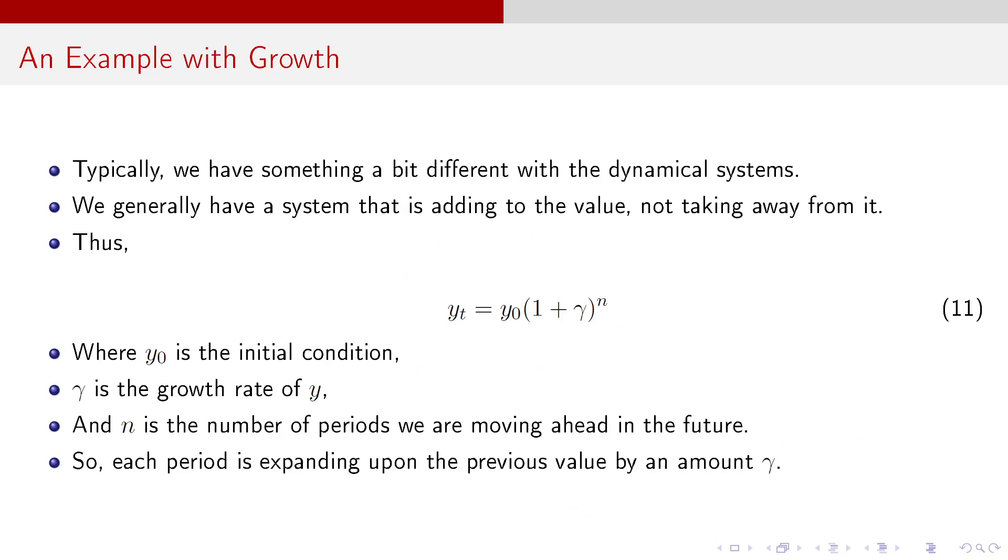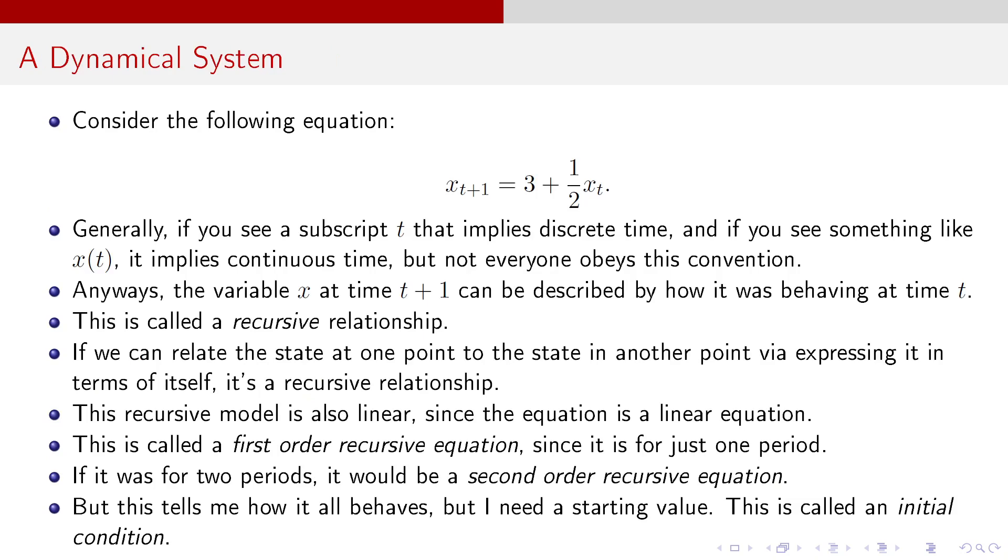Now, typically, we have something a little different with the dynamical systems that we're looking at. Generally, you know, we have a system that's adding to the value, not taking away from it. So usually, you'd have Y_t equals Y_0 times (1+gamma)^N. Gamma is the growth rate of Y. Y_0 is the initial condition, or like the starting point. And then N is the number of periods that we're going to be moving ahead in the future. So each period is expanding upon the previous value by an amount gamma, or a growth rate gamma. So that's kind of for modeling growth stuff. But we'll get a little bit more into that later. I just kind of wanted you to at least see it.